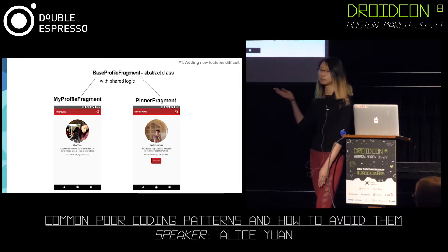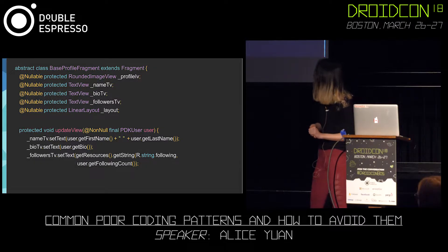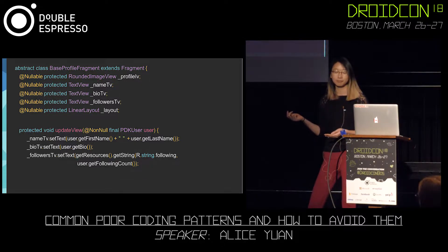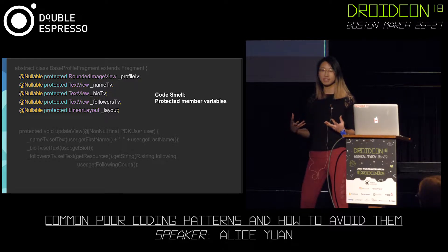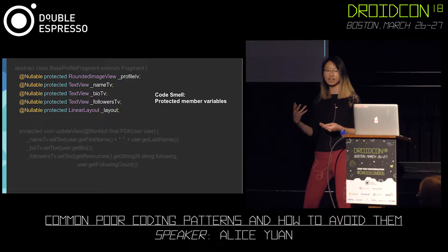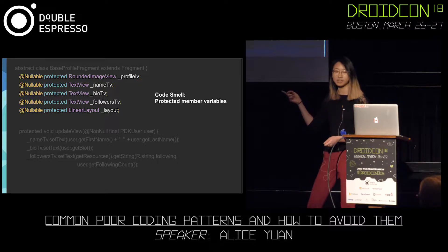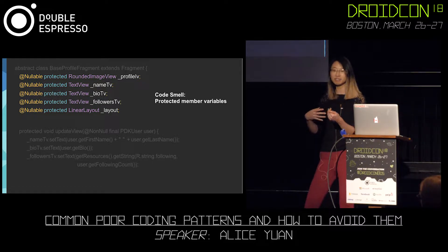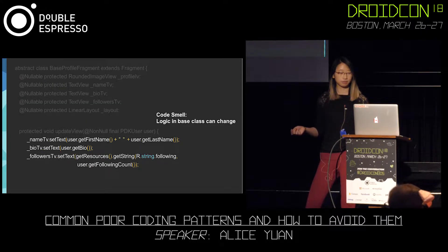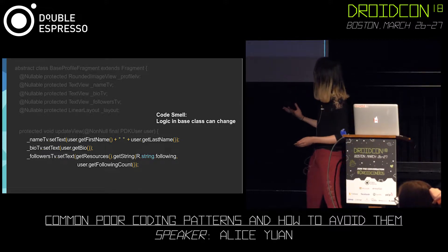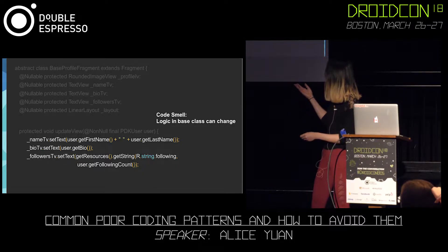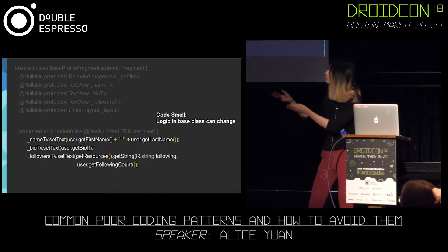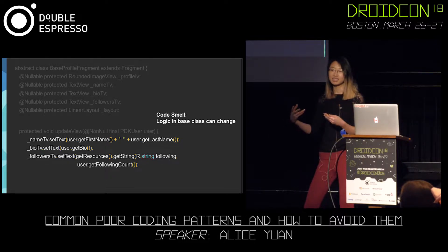We have this base profile fragment that's an abstract class with shared logic. Let's take a look at the code. What can we see about this code that might be sending us some red flags? Well, number one — our first code smell — is that we have these protected member variables. When we increase the scope of member variables, that means we can change them from anything that inherits those classes. So when I'm inheriting the base profile fragment and changing those member variables, I can edit those variables and also create bugs from any of the classes that are inheriting it. That makes it really difficult to debug over time. Our second code smell is that we have logic in the base fragment that can change over time. We want to update that following text, and we have that logic in the base class. So when setting the following text, we have to move that logic out of the base fragment and into its inherited fragments. That takes a lot more work.